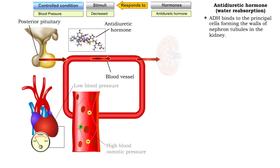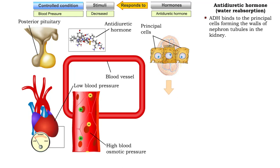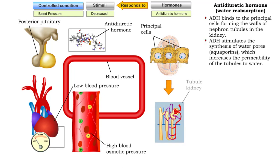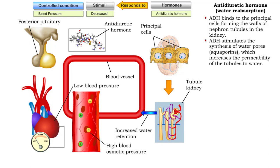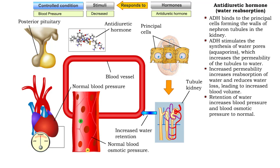ADH binds to the principal cells forming the walls of nephron tubules in the kidney, stimulating them to synthesize water pores and thereby increasing the permeability of the tubules to water. The reabsorption of water reduces water loss from the body, increasing blood volume and returning blood osmotic pressure to normal.